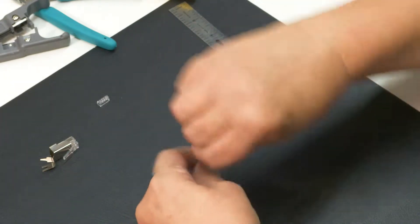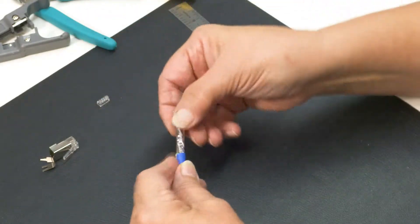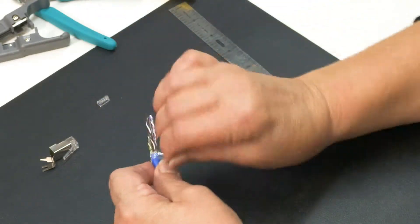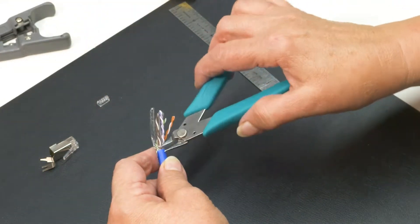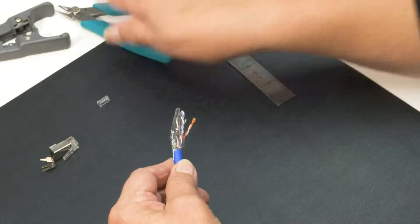Remove the foil shield, pull back the drain wire, and lay it flat against the cable. Remove the clear tape. Trim off any excess.